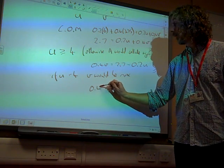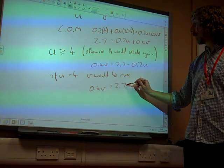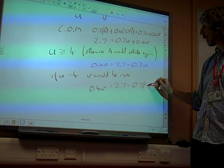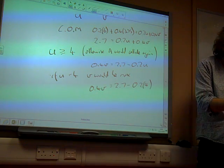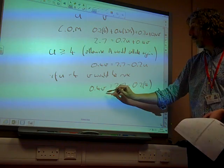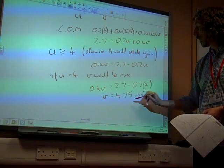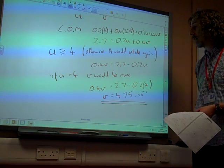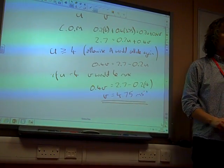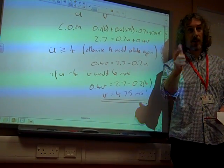So 0.4V is 2.7 minus 0.2 times 4, and that rearranged gives us V as being 4.75 meters per second as our final velocity. And that's maths.